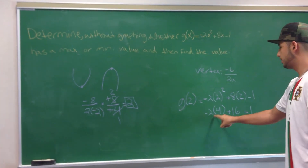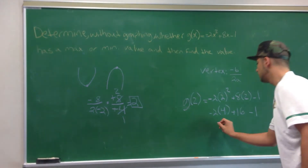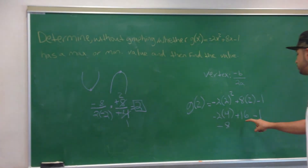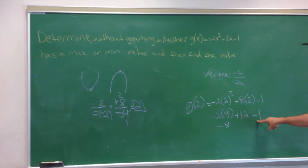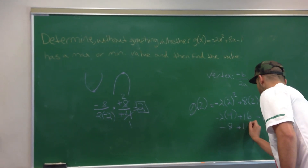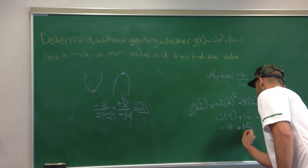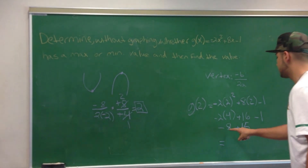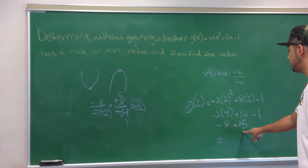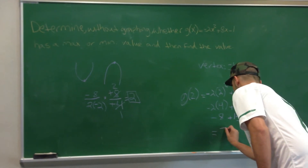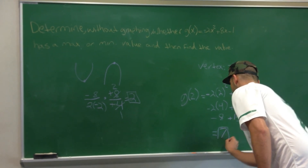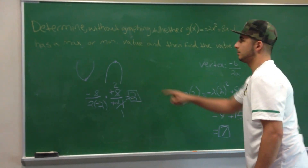Which would make this negative 8, and then 16 minus 1 gives positive 15. Then you subtract 8 from 15, which makes that 7. And that would be our maximum value.